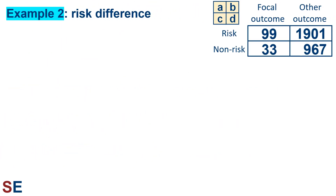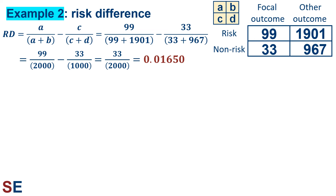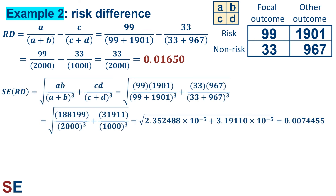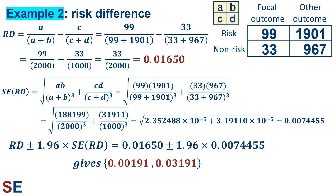Now for the risk difference, which we're expecting to be larger than 0. The equation calculates the difference between the proportions of observations showing the focal outcome in each risk category. Plugging in the values gives us a value of 0.01650. Individuals in the risk group seem to have a 1.65% higher chance of having the focal outcome than individuals in the non-risk group. The standard error equation gives us a final value of 0.0074455. Adding and subtracting 1.96 standard errors gives us an interval of 0.00191 to 0.03191 for the confidence interval of the risk difference.